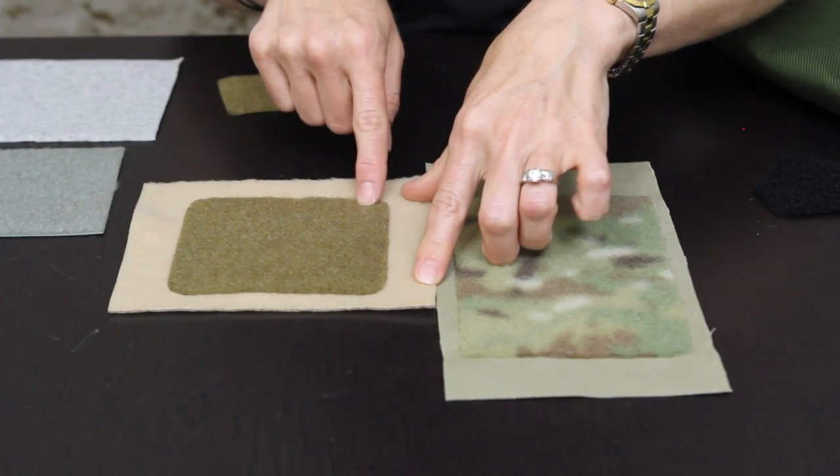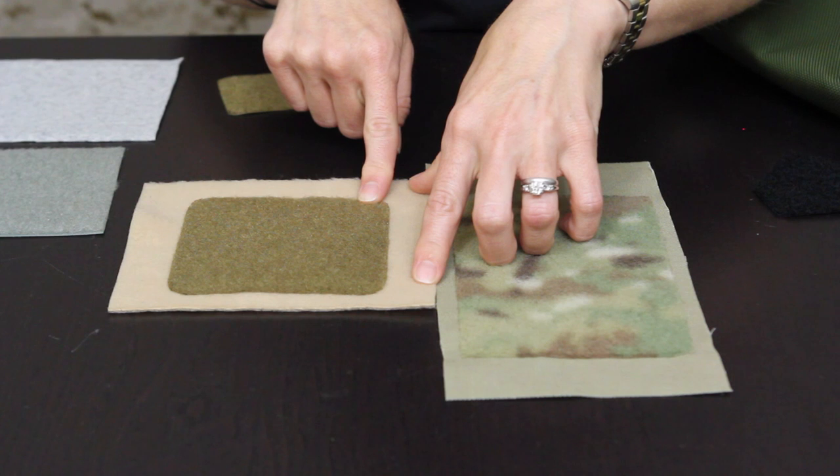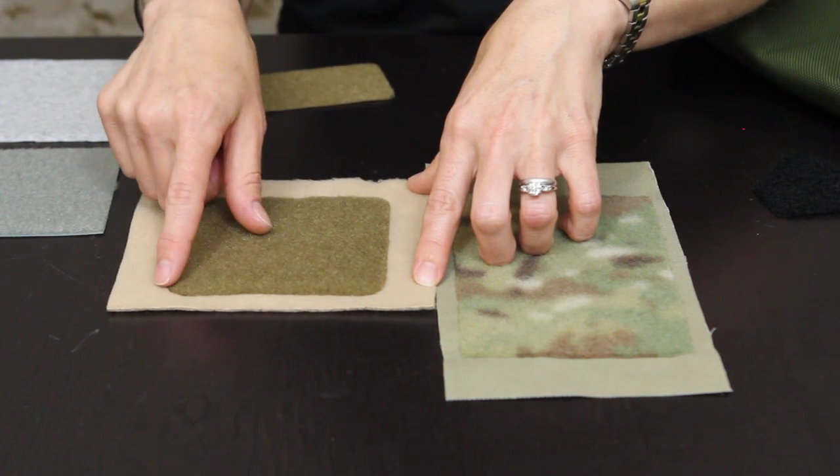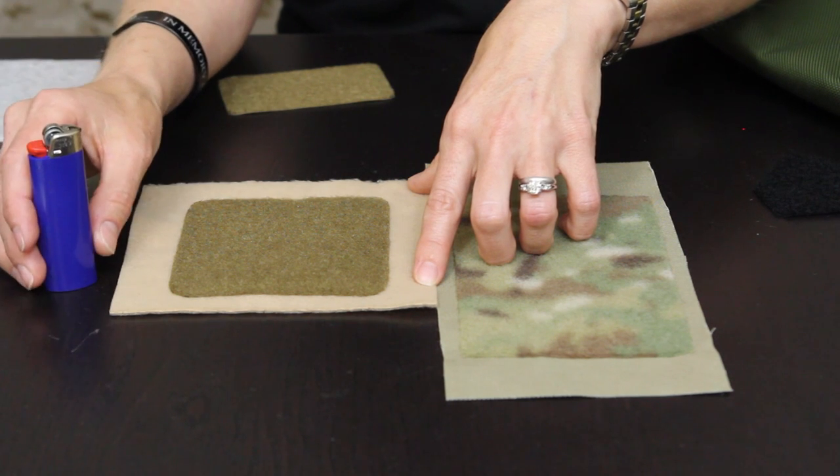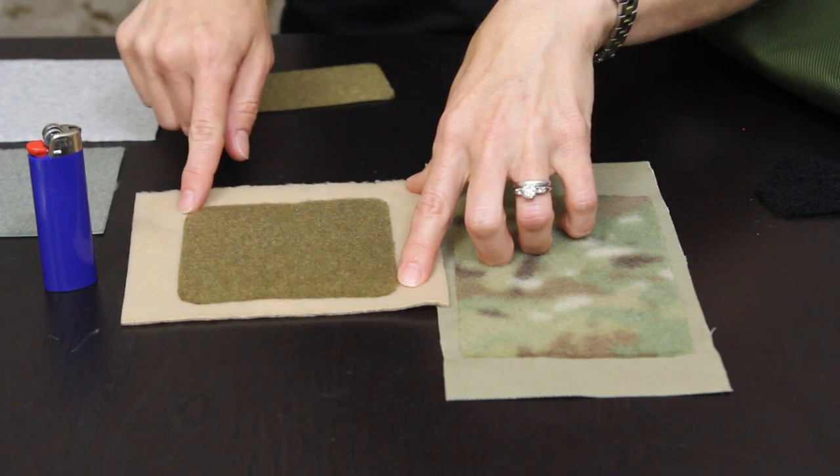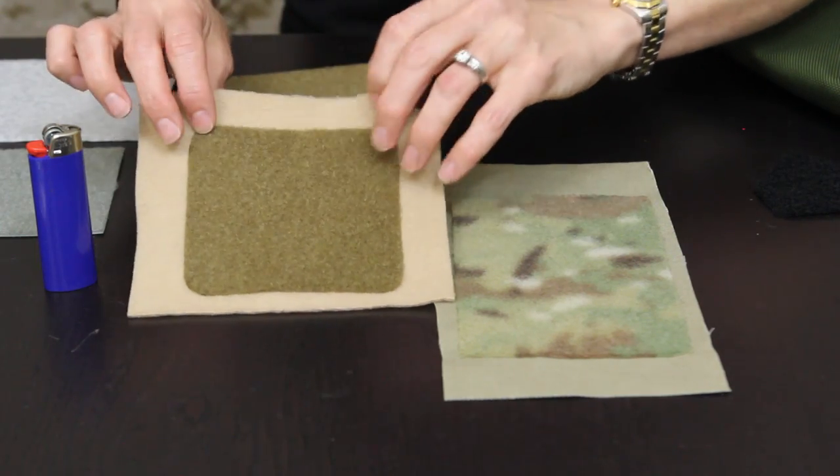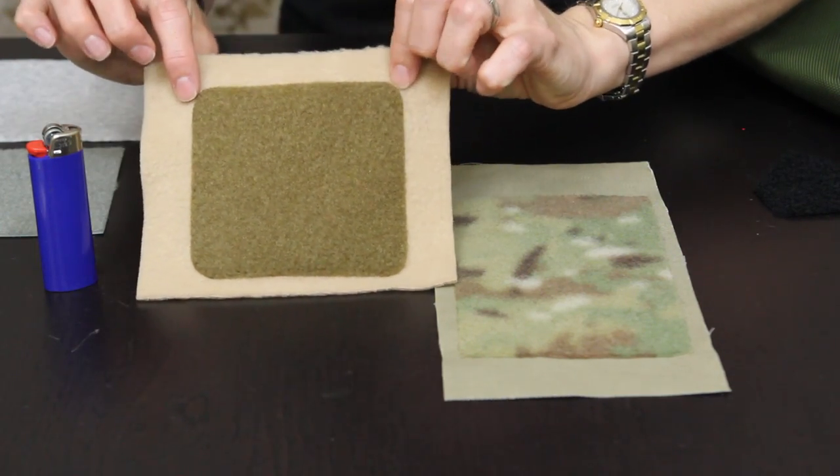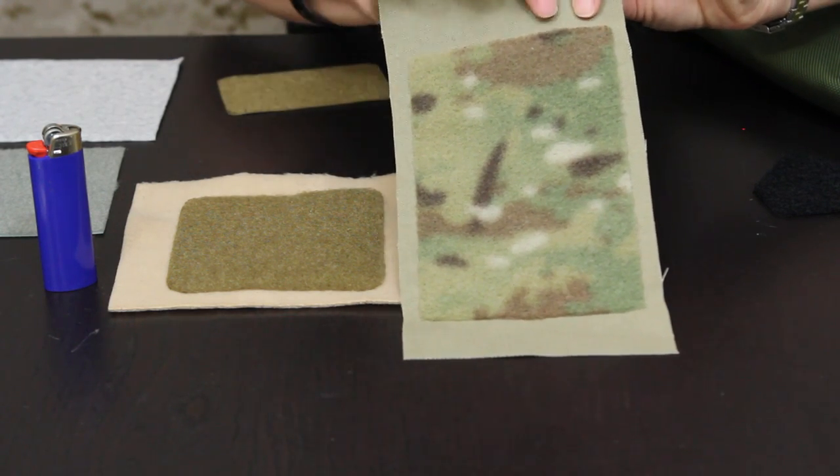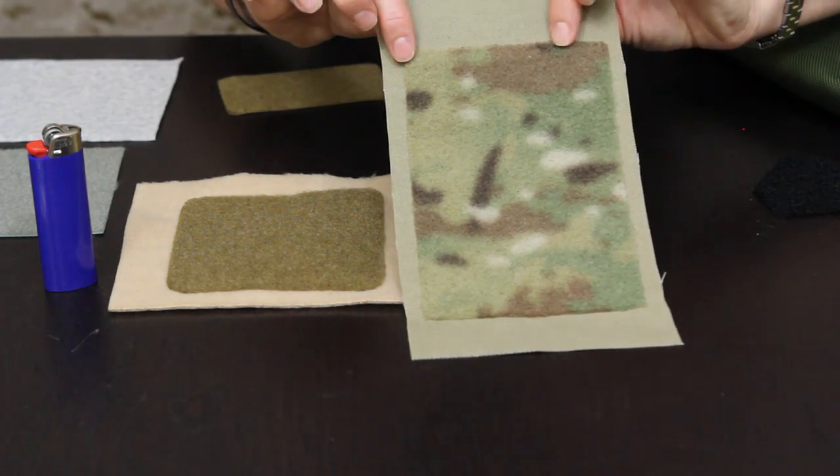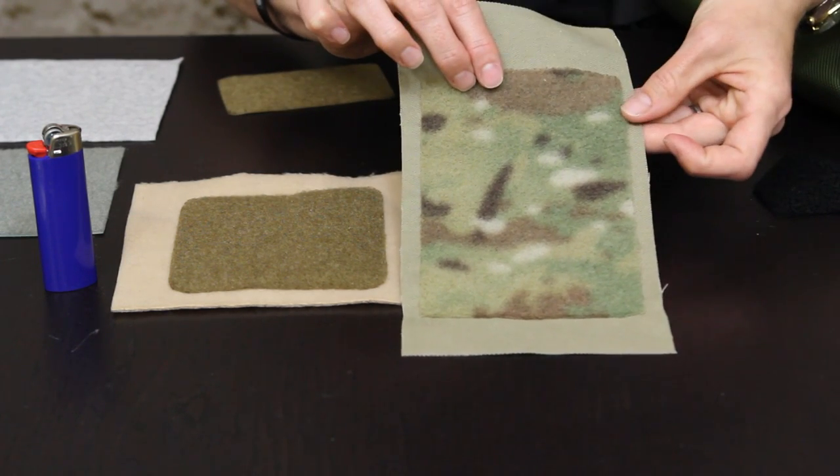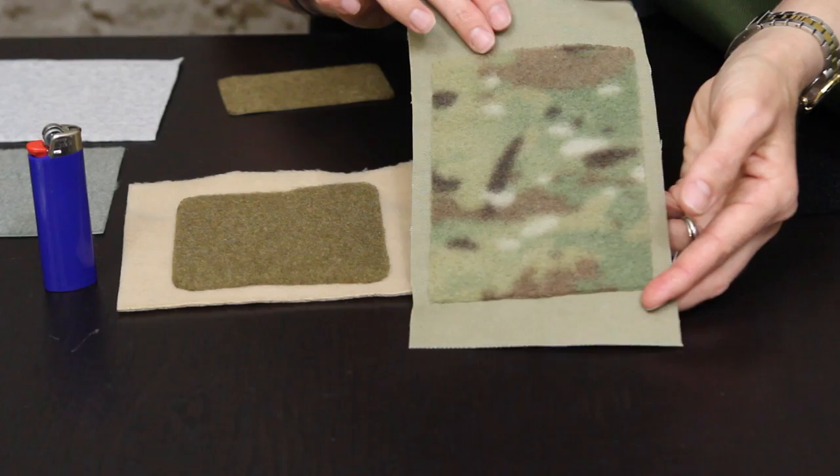This section here you can see has been trimmed down from our original four by six length of loop and I did a little bit of fusing with a lighter around the edges so that it made it a little less fuzzy and gave it more of a professional line around the edge. And this example here is straight out of the package, very minimal fusing to cut down on a little bit of the fuzziness of the loop as it comes, and just stitched right directly onto a piece of fabric.